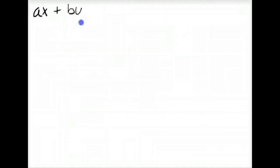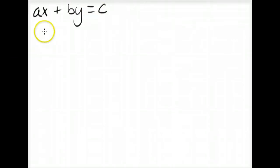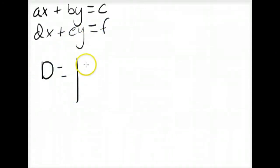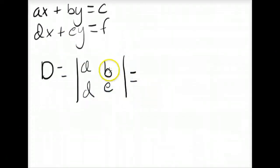That concludes this section on solving systems of equations with Cramer's Rule. The main things to remember: given equations AX plus BY equals C and DX plus EY equals F, the denominator is the determinant of the X and Y coefficients — the array A, D, B, E — which expands to AE minus BD.